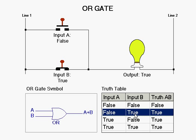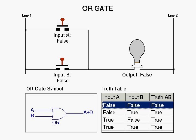The only time that the output on an OR gate is FALSE is when both inputs are FALSE.